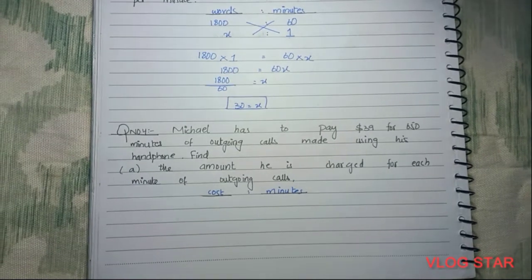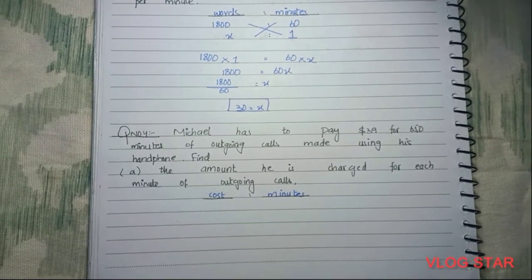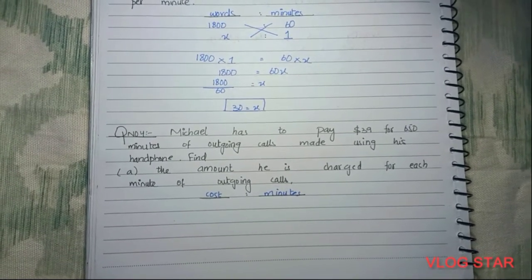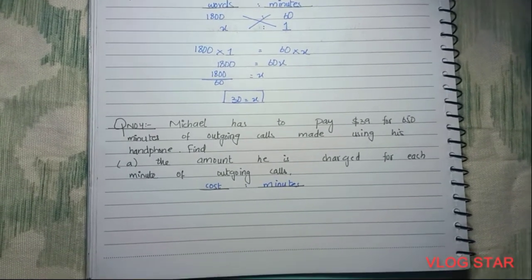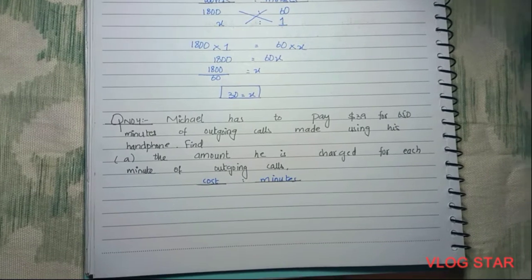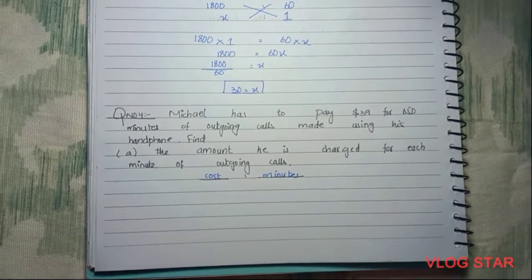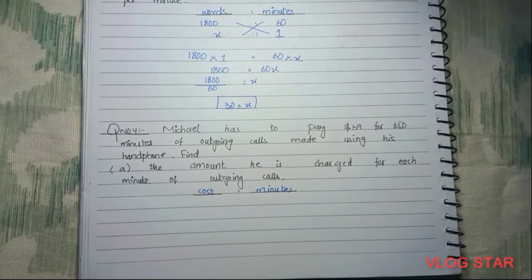In this question we use the ratio: cost to minutes. According to the question, Mikhail has to pay 39 dollars, so cost equals 39.